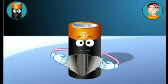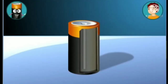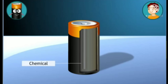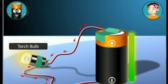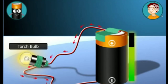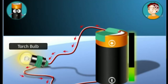These terminals can be used to connect me to various devices. Now take a look inside. Do you see that dark, powdery stuff? That's the chemical inside me. This chemical helps me provide electricity to the device I'm connected to. When I'm connected to a device like a torch bulb, as the bulb glows, the strength of the chemical decreases. Finally, when the chemical gets over completely, the connected device stops functioning.